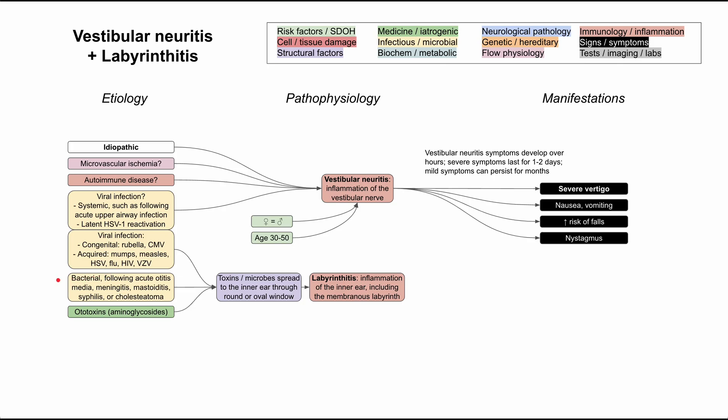There's also bacterial labyrinthitis, which typically follows a bacterial infection like acute otitis media, meningitis, mastoiditis, syphilis, or cholesteatoma. Some ototoxic medications, like aminoglycosides, can also cause labyrinthitis. The pathophysiology here is that these microbes or toxins make their way into the inner ear through the round or oval window — the two passageways from the middle ear to the inner ear — causing inflammation in the inner ear.